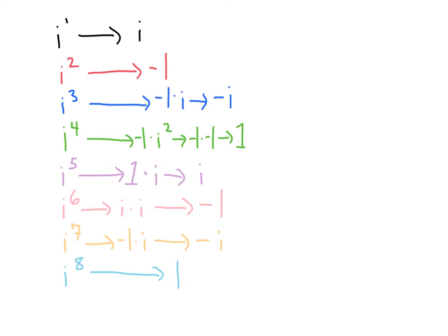We can use this pattern to help us simplify large powers of i. Notice that every 4th i is going to simplify to 1. If we go through the cycle once more from i to the 8th, 4 more will bring us i to the 12th, i9, i10, i11, i12, and i to the 12th we know is going to equal 1.